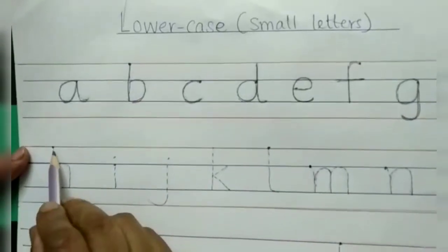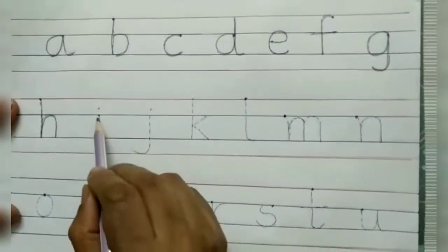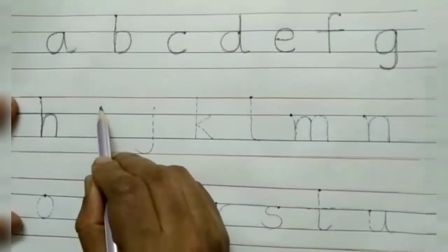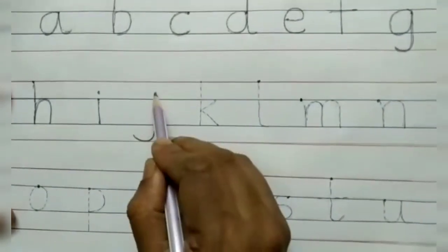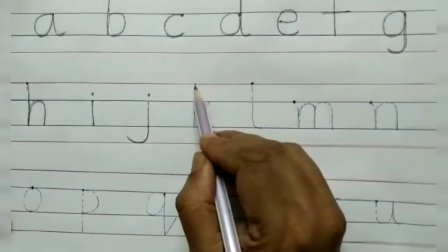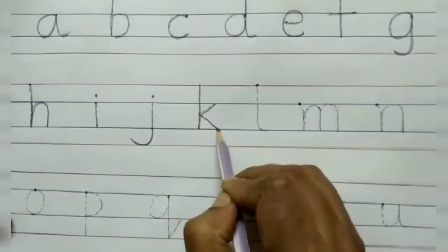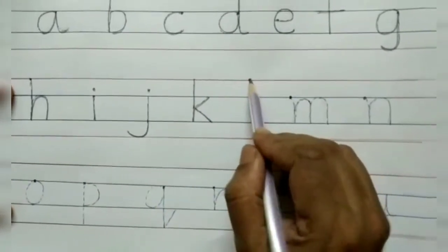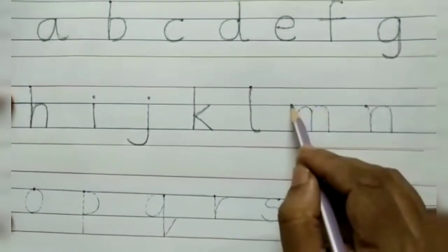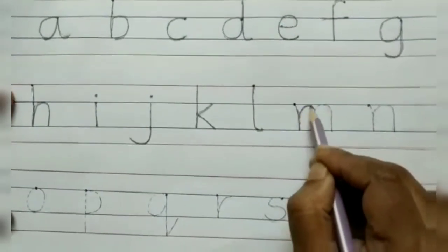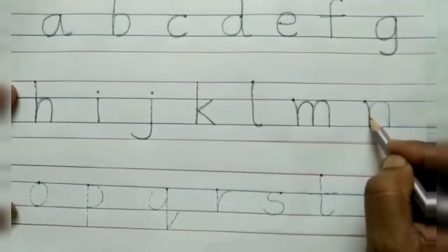H is a tall letter — standing line and jump. I, small letter. J is a hanging letter — down and hook, dot. K is a tall letter — standing line, slanting line. L is a tall letter starting from the red line — down. M — down, one jump and two jump. Letter M, small letter.